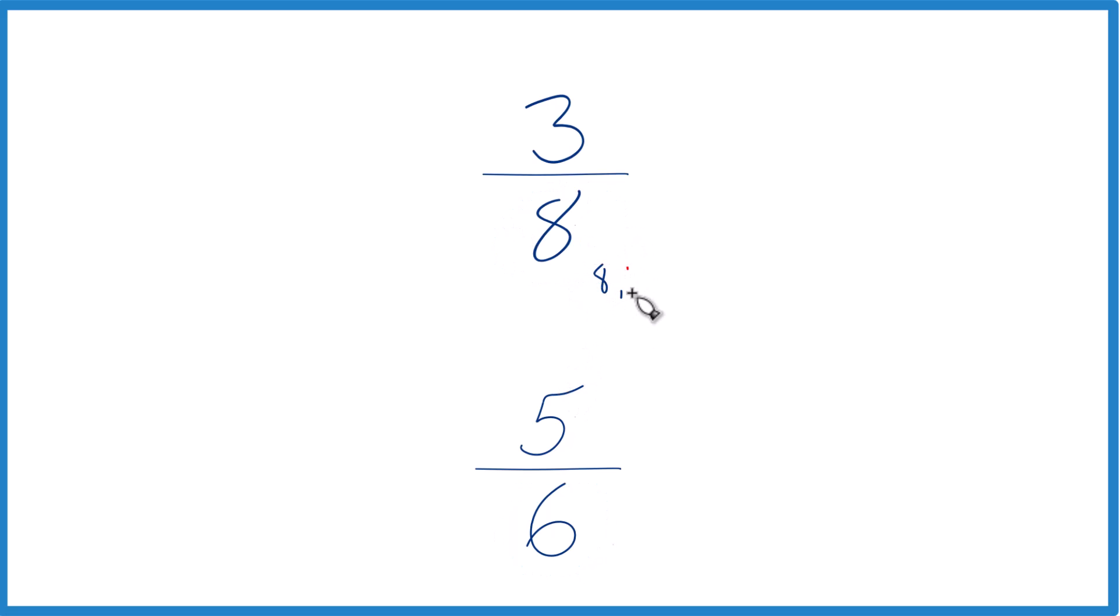So if we look at 8, we have 8, 16, 24, 32. Then for 6, we could say 6, 12, 18, 24, and there it is, 24.